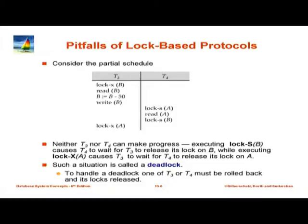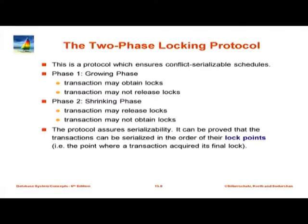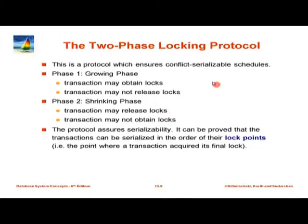That protocol is called two-phase locking. In the two-phase locking protocol, there is a growing phase during which transactions can obtain locks but cannot release any locks. After that, the transaction enters the shrinking phase — in this phase it may release locks but may not obtain any new locks. You have to get read locks before you read, exclusive locks before you write. In the first phase you can keep obtaining locks, but the moment you release even one lock, you cannot obtain any more locks. Once you have released a lock on an item, you cannot read or write that item.